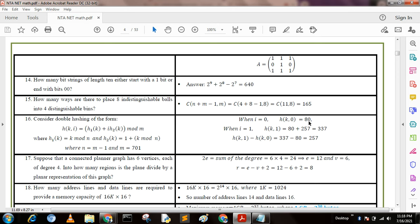When i = 1, we get value 80 + 257. We put i = 0 and i = 1, then subtract both values: h(k,0) - h(k,1), and we get the result 257.